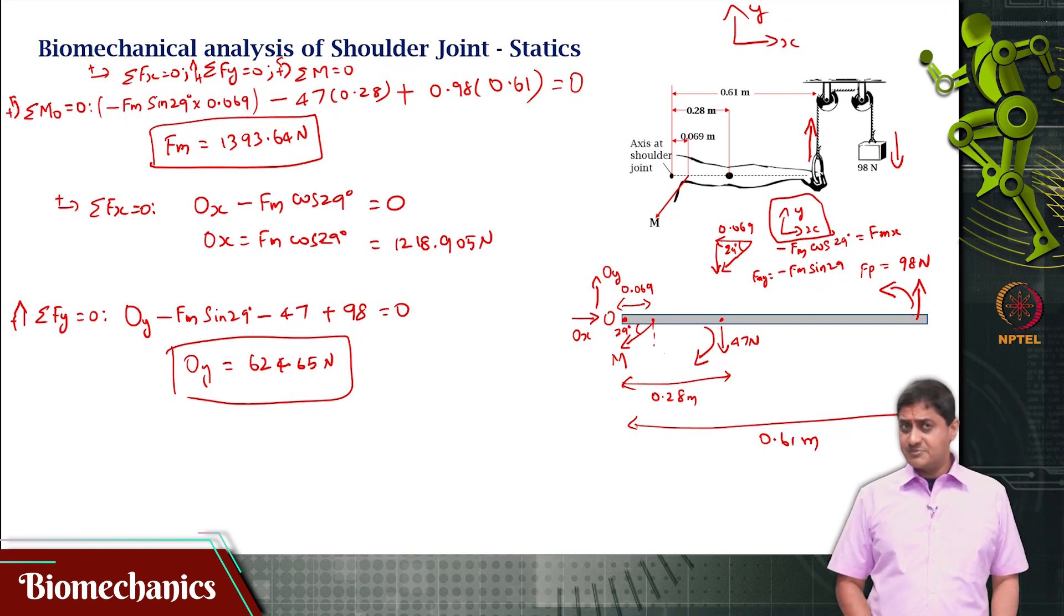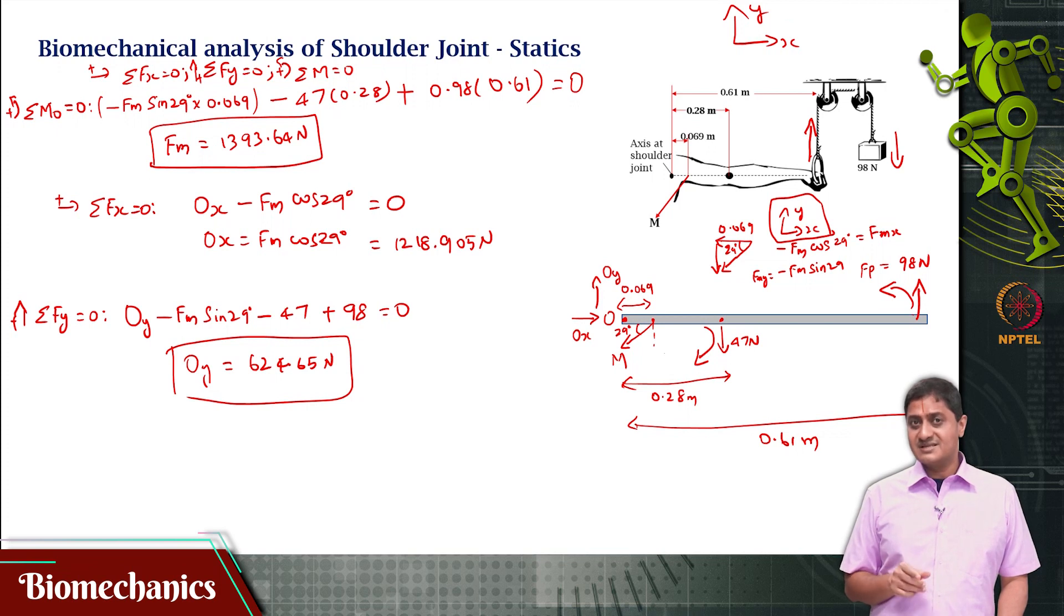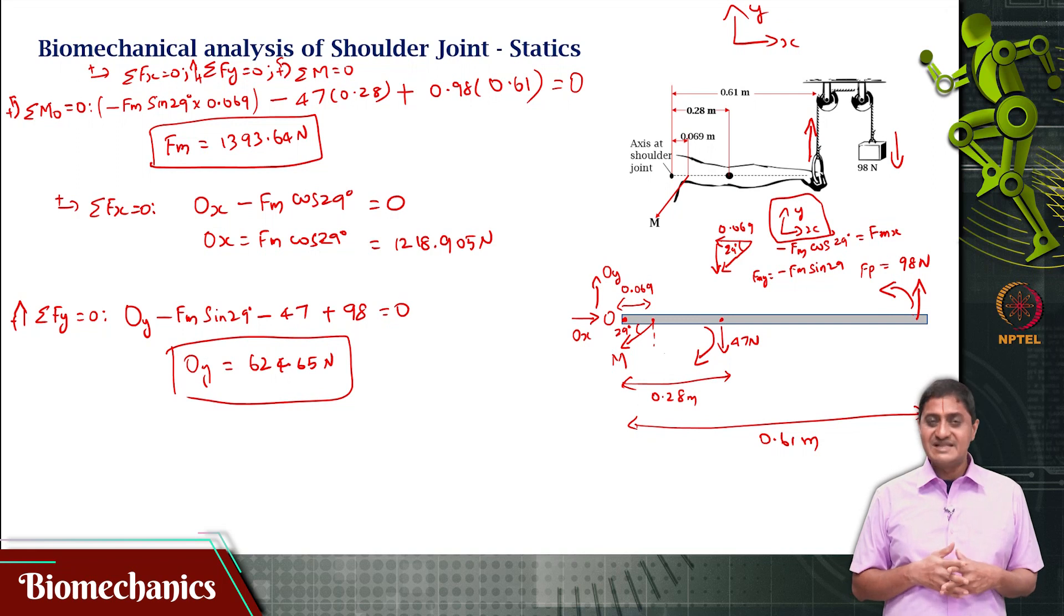Now, compared with the last problem, this problem appears to be slightly simple because the forces are given unlike masses and the corresponding distances at which these are acting or the centre of masses being given. Then you will have to multiply the mass by 9.81 to get the weight or the force and let it act at the corresponding centre of mass which is why this problem is slightly simpler. The principles are still the same.